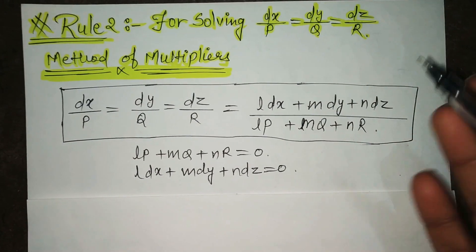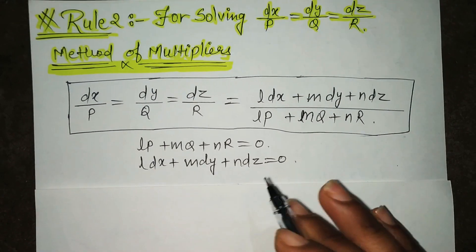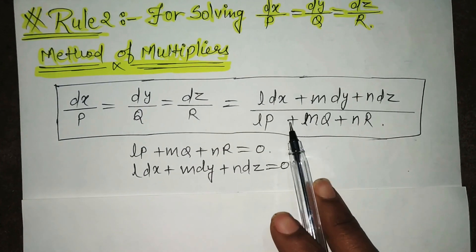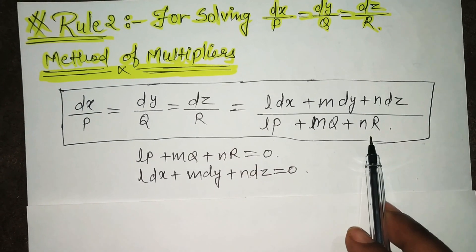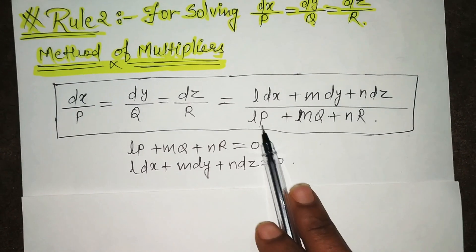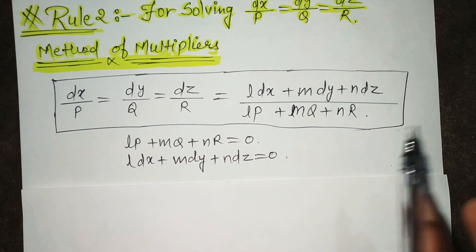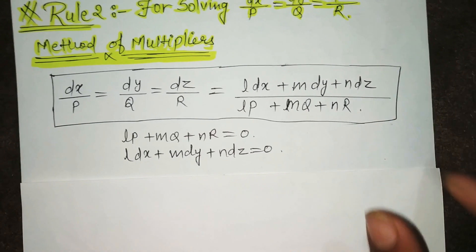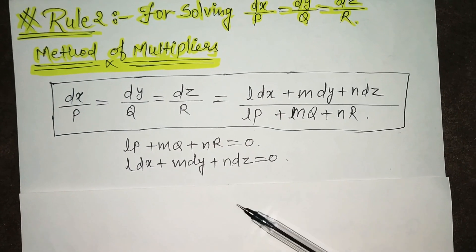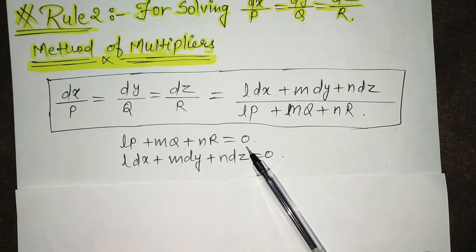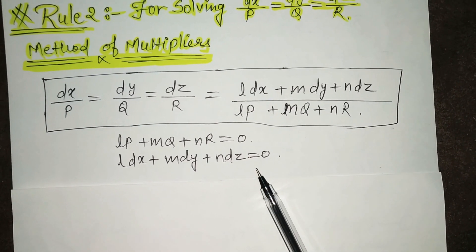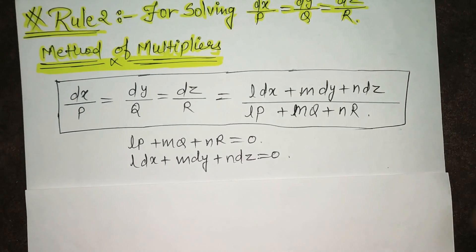You have to place values such that the entire denominator term converts to zero. You have to do this — as soon as it converts to zero, this is equated with zero. It means when you place zero here, this will also equate with zero. Now let's see the example.